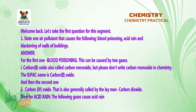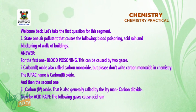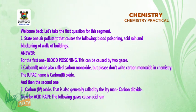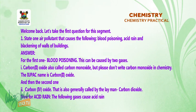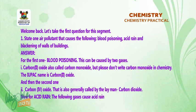Welcome back. Let's take the first question for this segment: state one air pollutant that causes the following — blood poisoning, acid rain, and blackening of walls of buildings. For blood poisoning, this can be caused by two gases: carbon(II) oxide, also called carbon monoxide — but please don't write carbon monoxide in chemistry, the IUPAC name is carbon(II) oxide.